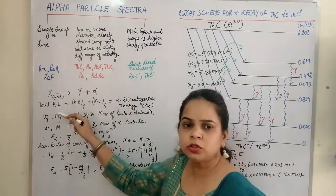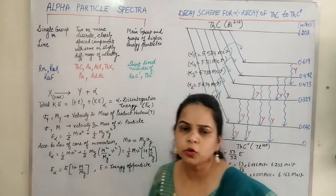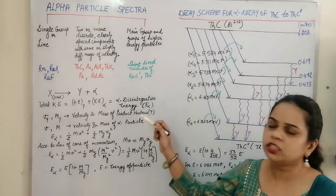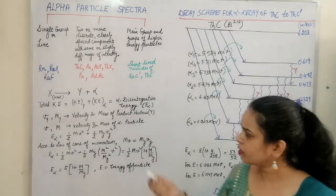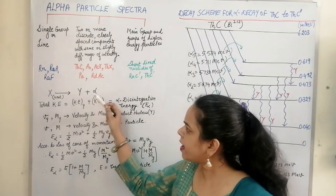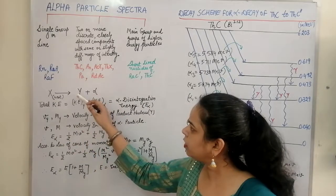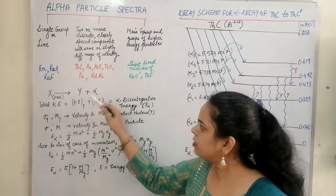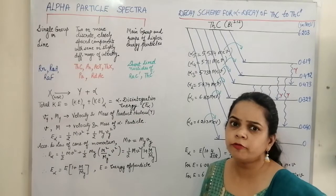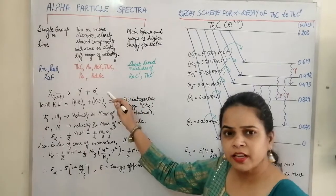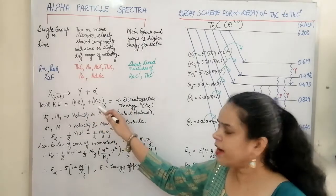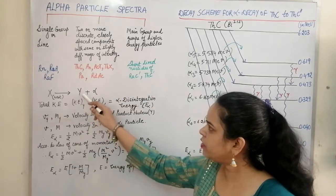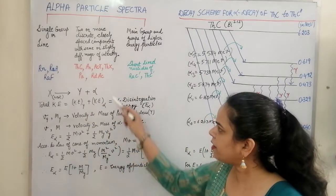This total kinetic energy is also called the total disintegration energy of the reaction — the total alpha disintegration energy, represented by E_alpha. Let V_Y and V be the velocities of the daughter nucleus and the alpha particle, and let M_Y and M be their respective masses. The alpha disintegration energy is the sum of kinetic energies: E_alpha = (1/2)MV² + (1/2)M_Y V_Y².